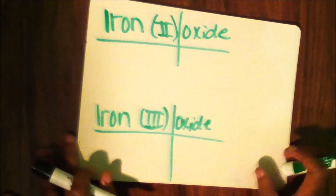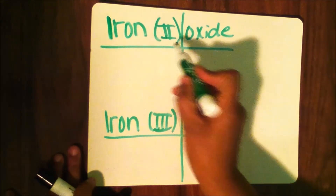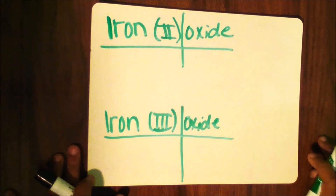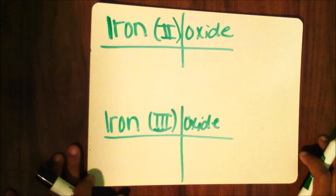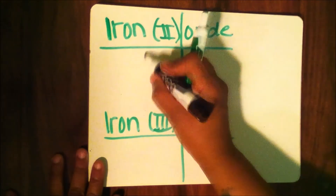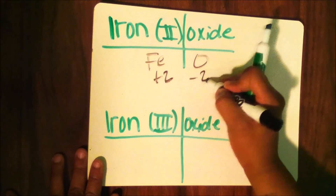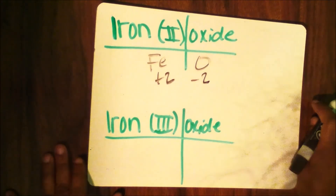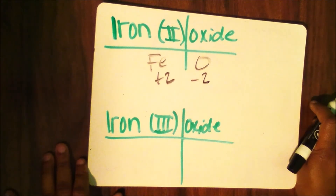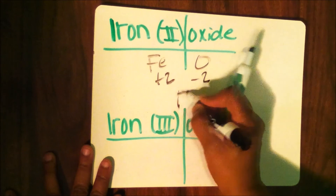Here I have iron(II) oxide. The Roman numeral 2 tells me which charge to use for iron, because iron has a charge of either plus 2 or plus 3. So in this case, iron has a charge of 2, and oxygen has a negative 2 charge from the periodic table. As stated before, when the numbers are the same they cancel each other out, and I get FeO.